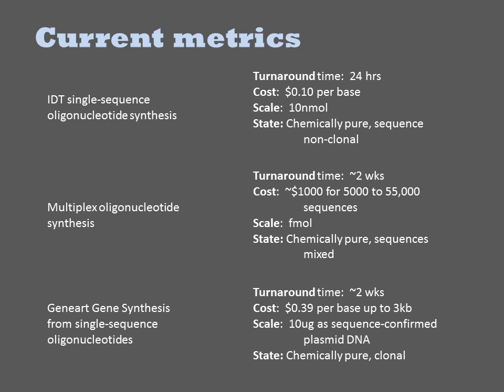Multiplex oligonucleotide synthesis takes longer to order, around two weeks. It costs around $1,000 for 5,000 to 55,000 oligos, but the pricing is highly variable and requires negotiation. As of 2014, this is still an experimental product, and most commerce is business-to-business rather than to end users.